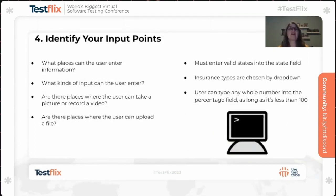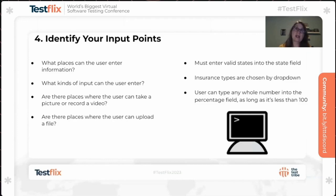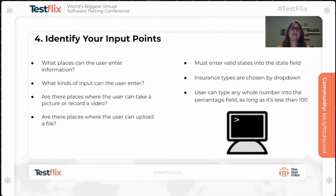Step four is to identify your input points. What places can the user enter information? What kinds of input can the user enter? Are there places where the user can take a picture, record a video, or upload a file? These are crucial points to test because vulnerabilities can hide here — security issues can be exploited using user input. For the Lead Assignment Engine, I discovered that valid states had to be entered into the state field, insurance types were chosen by dropdown, and the user could type any whole number into the percentage field as long as it was less than 100, with validation if the value exceeded 100.